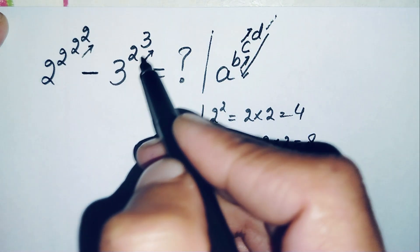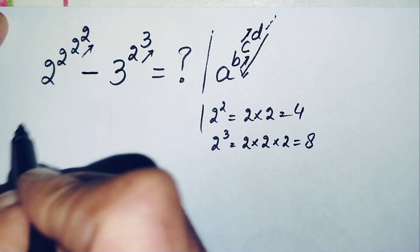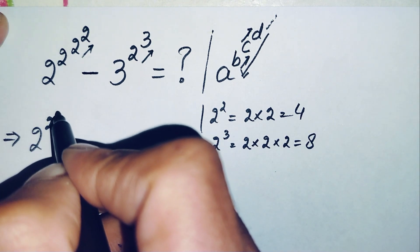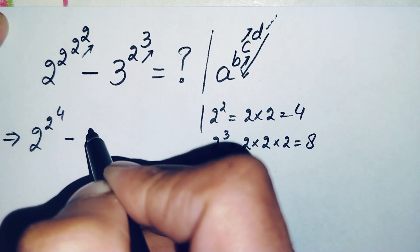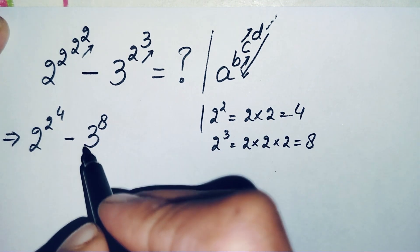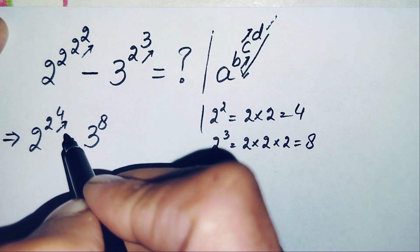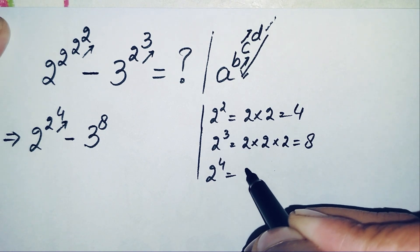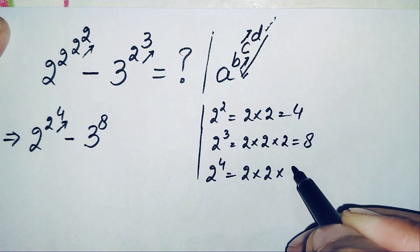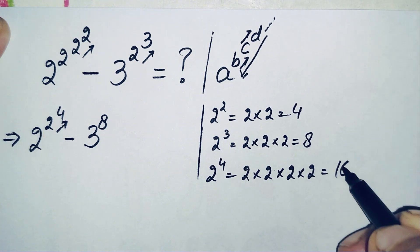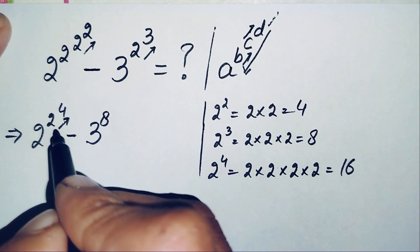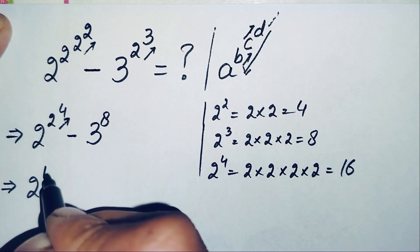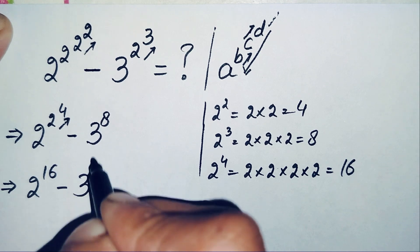We replace 2 raised to power 2 with 4 and 2 raised to power 3 with 8, so the expression becomes 2 raised to power 2 raised to power 4, minus 3 raised to power 8. Next, we find the value of 2 raised to power 4: multiplying 2 four times gives 2×2=4, 4×2=8, 8×2=16. So 2 raised to power 4 is 16, and we replace that power with 16, giving us 2 raised to power 16 minus 3 raised to power 8.